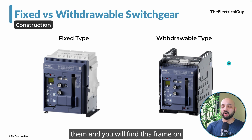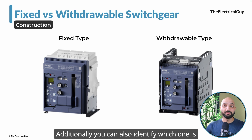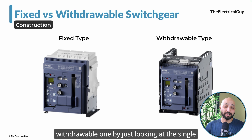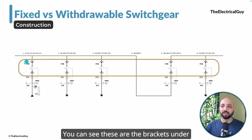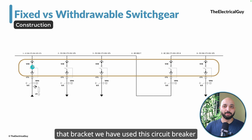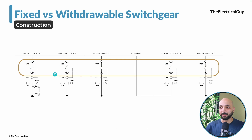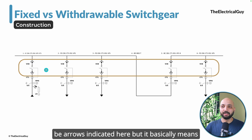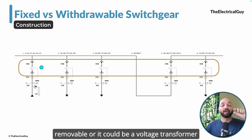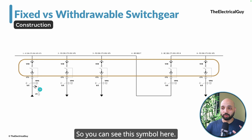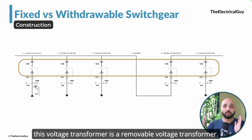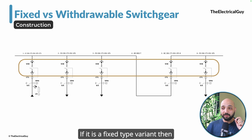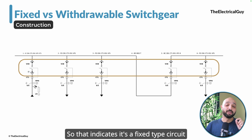If you get a chance to see those breakers, you will find this frame on the withdrawable type circuit breaker. You can also identify them on the single-line diagram — the single-line diagram differentiates fixed and withdrawable type by using brackets. Under that bracket you will see the circuit breaker symbol, or there may be arrows indicating the same thing — meaning those breakers are removable. For a voltage transformer, a bracket means it is a removable VT. If it is a fixed type, there are no brackets or arrows — just a direct connection.